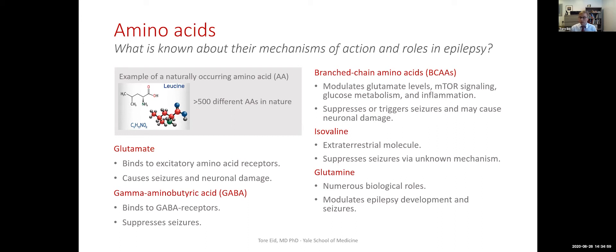The last amino acid I will mention today — and there are many more — is glutamine. Glutamine is the most abundant amino acid in blood and has many roles in the body. There are some recent studies showing that glutamine has an effect on both epilepsy development, or epileptogenesis, and on seizures.